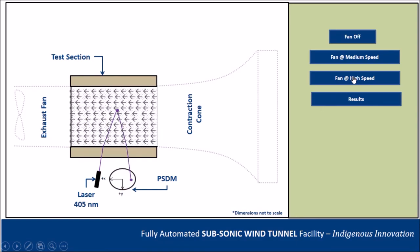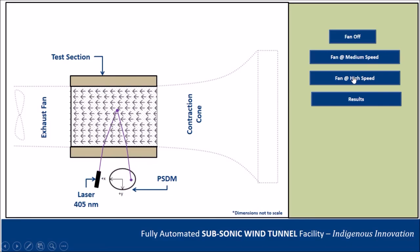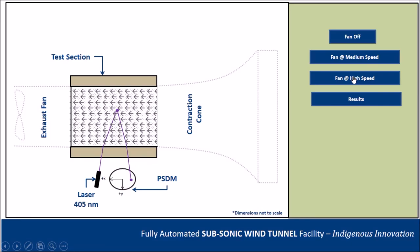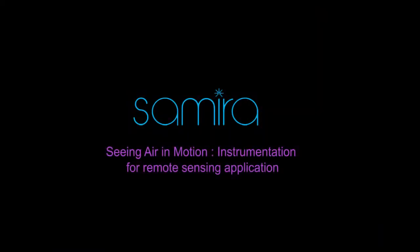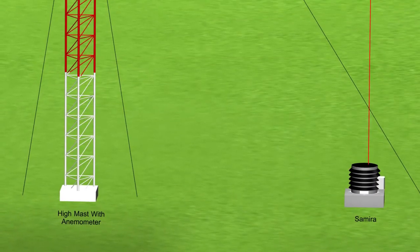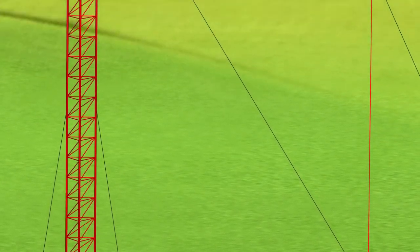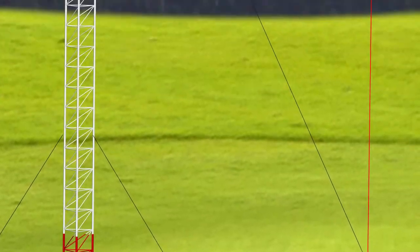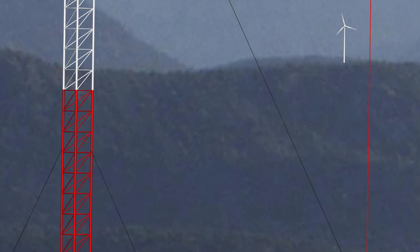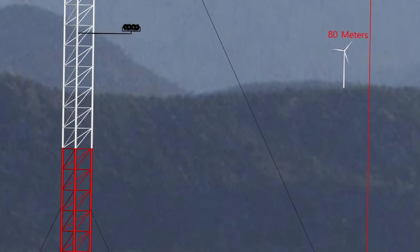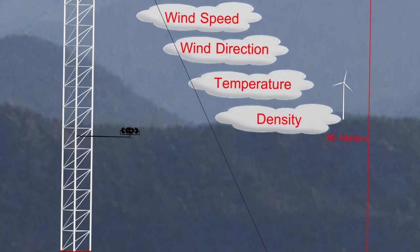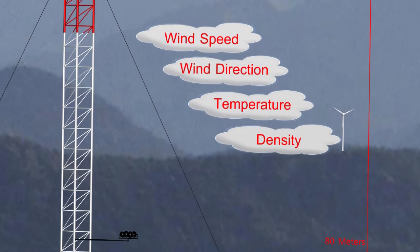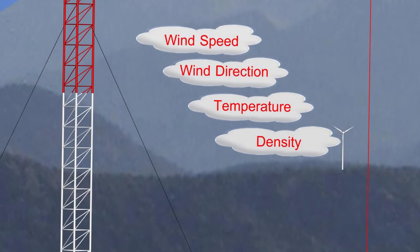The next technology is Samira. Samira enables one to generate a profile of information about the environment — especially wind, temperature, and density — either in the horizontal range or in the vertical range.